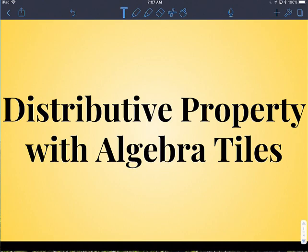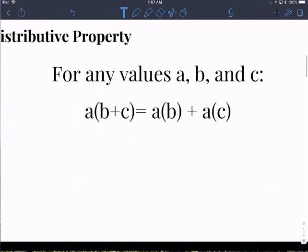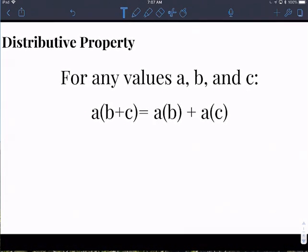We're going to talk about the distributive property with algebra tiles. First of all, the distributive property basically says that for any values that you have, we're going to call them A, B, and C. They're variables, they could be anything. When you multiply A times the quantity B plus C, you really are getting A times B plus A times C.